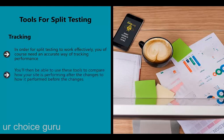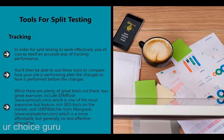You'll then be able to use these tools to compare how your site is performing after changes versus before. Two great examples include SEMrush (semrush.com), one of the most expensive but feature-rich SEO tools on the market, and SERP Watcher from Mangools (serpwatcher.com), which is a more affordable but generally no less effective alternative.